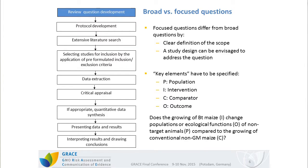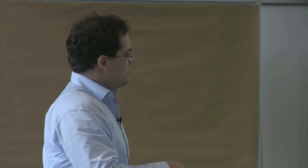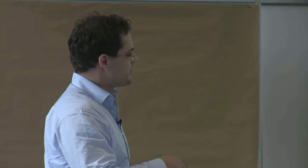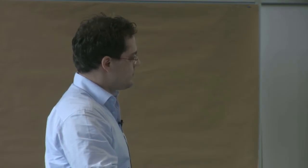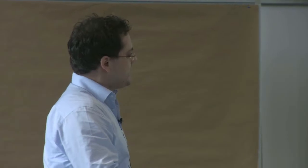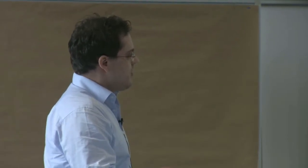In order to facilitate the formulation of a focused question, so-called key elements have to be specified. A very common question format is the PICO structure, where P stands for Population, I for Intervention, C for Comparative, and O for Outcome. Here is an example from a review question addressed in the course of the project: 'Does the growing of Bt maize change the population or ecological function of non-target animals compared to the growing of conventional non-GM maize?' The population is non-target animals, the intervention is growing Bt maize, the comparator is growing conventional non-GM maize, and the outcome is a change in populations or ecological function.